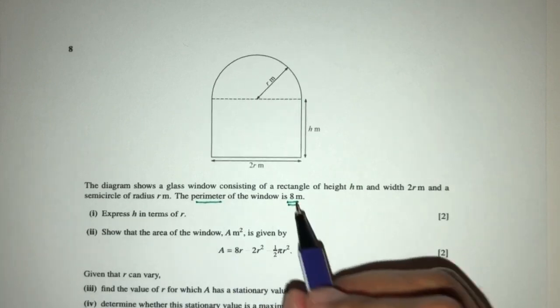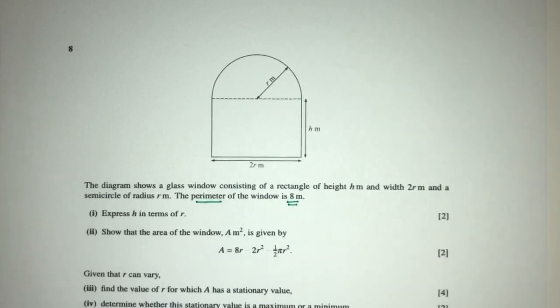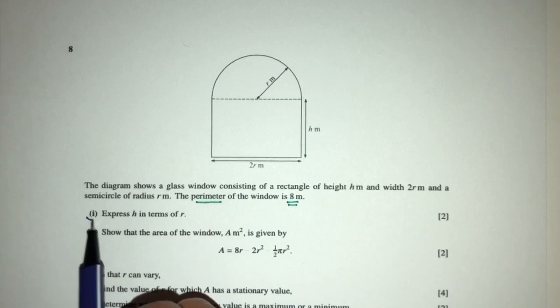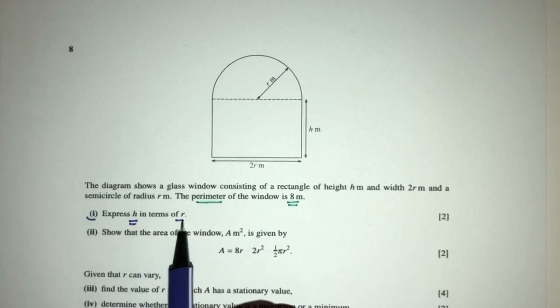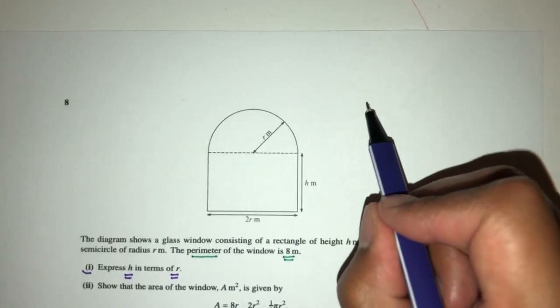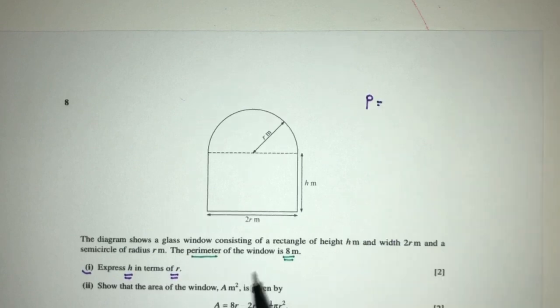You have to use this somewhere, somehow. Now, part one, express h in terms of r. So first thing first, we know that the value of p, the perimeter, is 8. So how would you find the perimeter of this shape? By definition, the perimeter is the distance around the object.